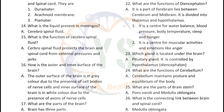What are the functions of diencephalon? It is a part of forebrain that lies between the cerebrum and midbrain. It is divided into thalamus and hypothalamus. It is a center for water balance, blood pressure, body temperature, sleep and hunger. It is also a center for muscular activities and emotions like anger. Which gland is located under the brain? Pituitary gland. It is controlled by the hypothalamus.